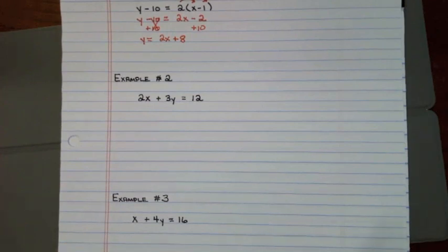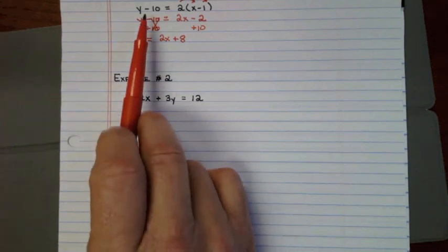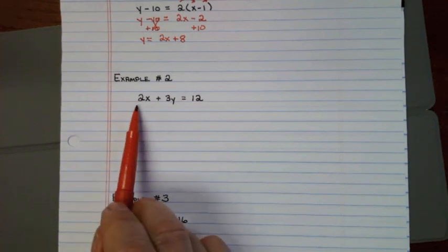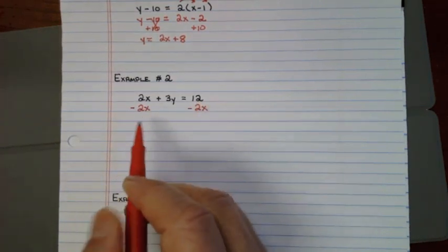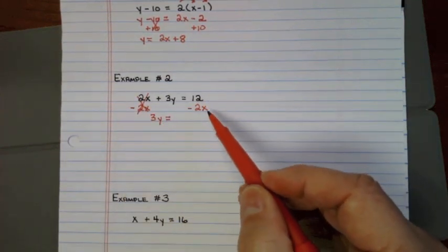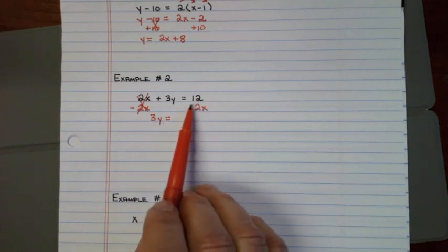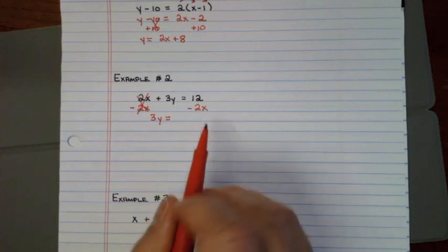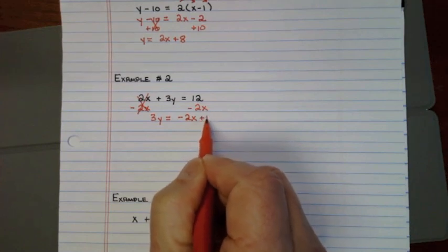Example number two: I need to make this equation look like Y = something. The Y needs to be by itself, so I need to get rid of the 2X by subtracting 2X from both sides. That cancels out, leaving 3Y. Since these are not like terms I can't combine them, so putting them in the correct order — X term first, then the constant — I write negative 2X plus 12.